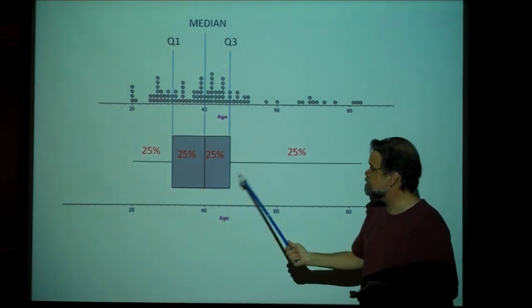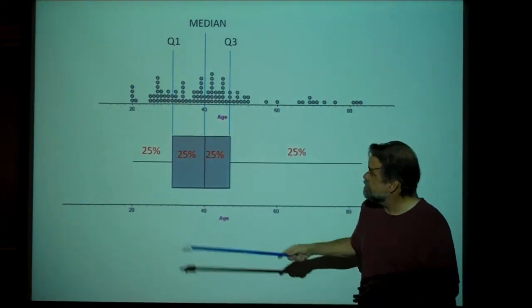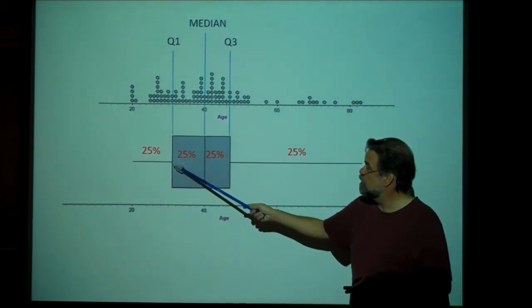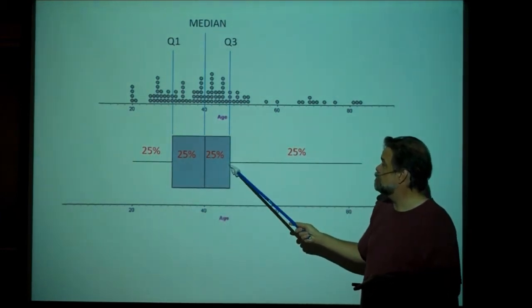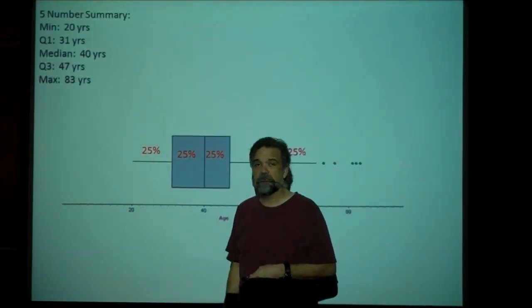So the box plot is basically based on the five-number summary. That is the minimum, Q1, the median, Q3, and the maximum. That is our five-number summary.